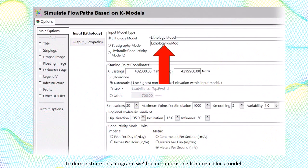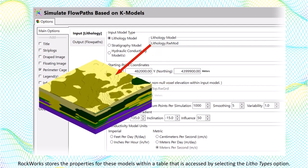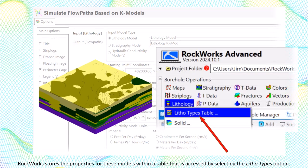To demonstrate this program, we'll select an existing lithologic block model. RockWorks stores the properties for these models within a table that is accessed by selecting the lithotypes option.